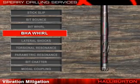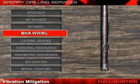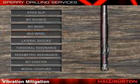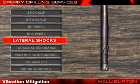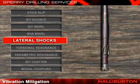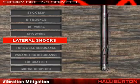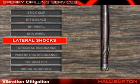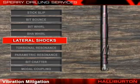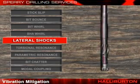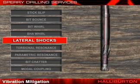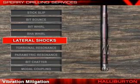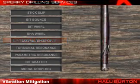Occurring as forward or backward whirl, BHA whirl constitutes the main cause of BHA and downhole tool failure. Next, lateral shocks describes what happens when the vibration mechanisms of bit bounce, BHA whirl, or modal coupling become so extreme, they cause the release of energy built up in the drill string through sudden large lateral shock impacts. Unlike BHA whirl, where the motion settles to a steady state, in this case the lateral shocks occur randomly.